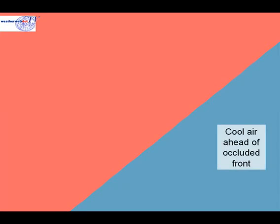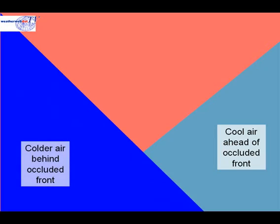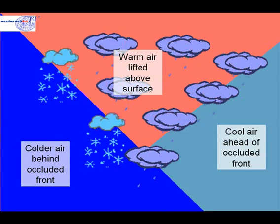Let's take a look at a cross-section through an occluded front. Ahead of the front is the cool air. This is more dense than the warm air that follows, so the warm air tends to rise above the cool air ahead of it. Moving in behind is even colder, more dense air. This forces the warm air to rise above the surface. It condenses, clouds form, and rain begins to fall.